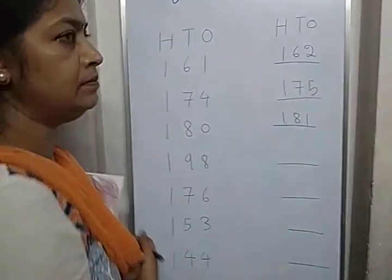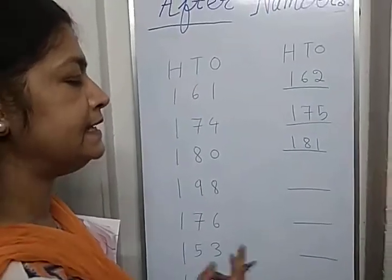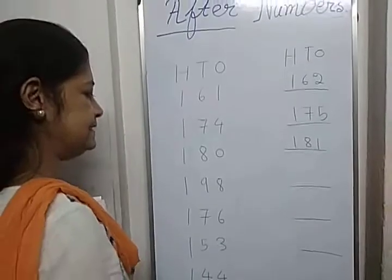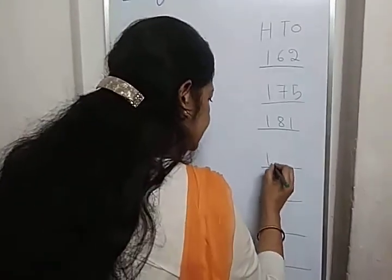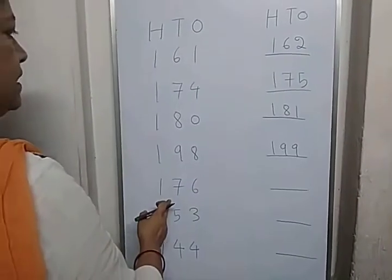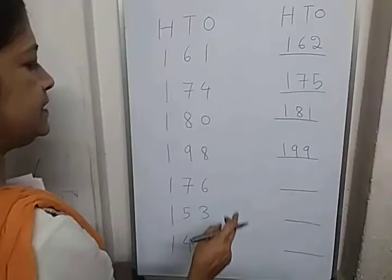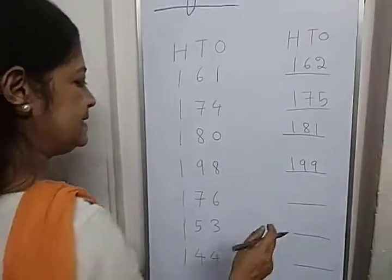Start counting from 90: 90, 91, 92, 93, 94, 95, 96, 97, 98, 99. Then start counting from 70: 71, 72, 73, 74, 75, 76, 77.